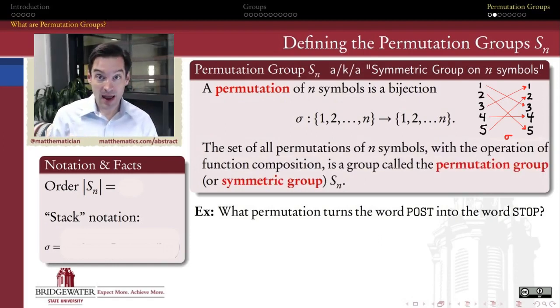Why this becomes abstract algebra and not just a mathematical curiosity is that if I take the set of all permutations of n symbols together with the operation of composition—composing these functions one with another, or applying one permutation and then permuting the result—that structure forms a group.